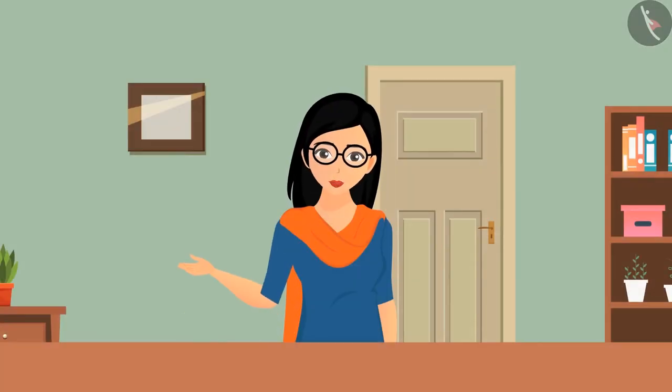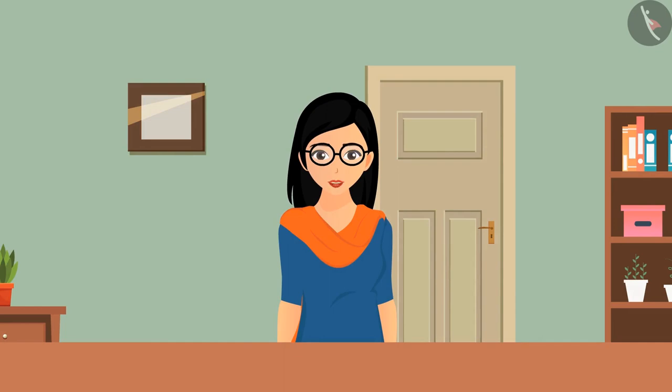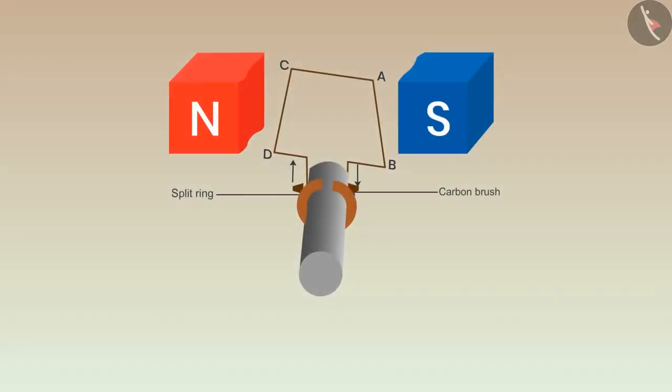You must be wondering how a DC generator works. In the starting of the video, we replaced the split ring with two complete rings. If we put it back, then we will get a DC current.